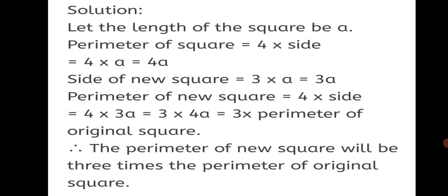We wrote the formula for the perimeter of the old square, then wrote the perimeter of the new square by substituting the side as 3A. We substituted 4A as the perimeter of the original square and found that the perimeter of the new square is 3 times the perimeter of the original square.